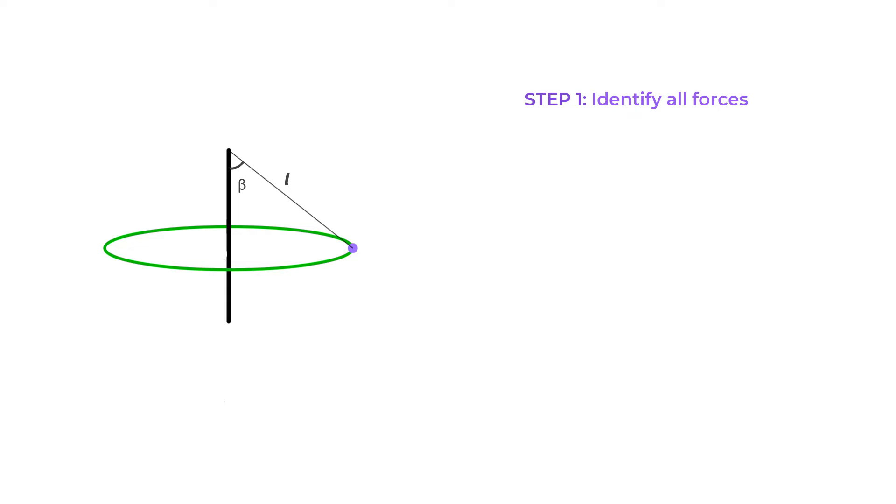Weight W equals MG acting vertically downwards, and tension in the string that has two components. And we will label tension in the string as F instead of the usual T because later on we will derive the time period T and I therefore want to avoid any confusion.